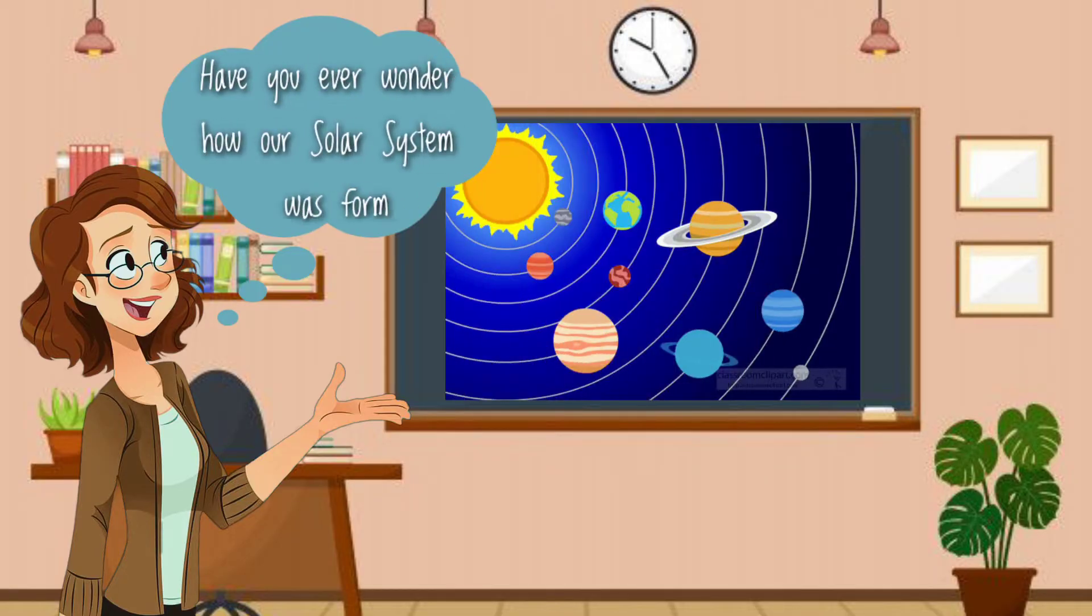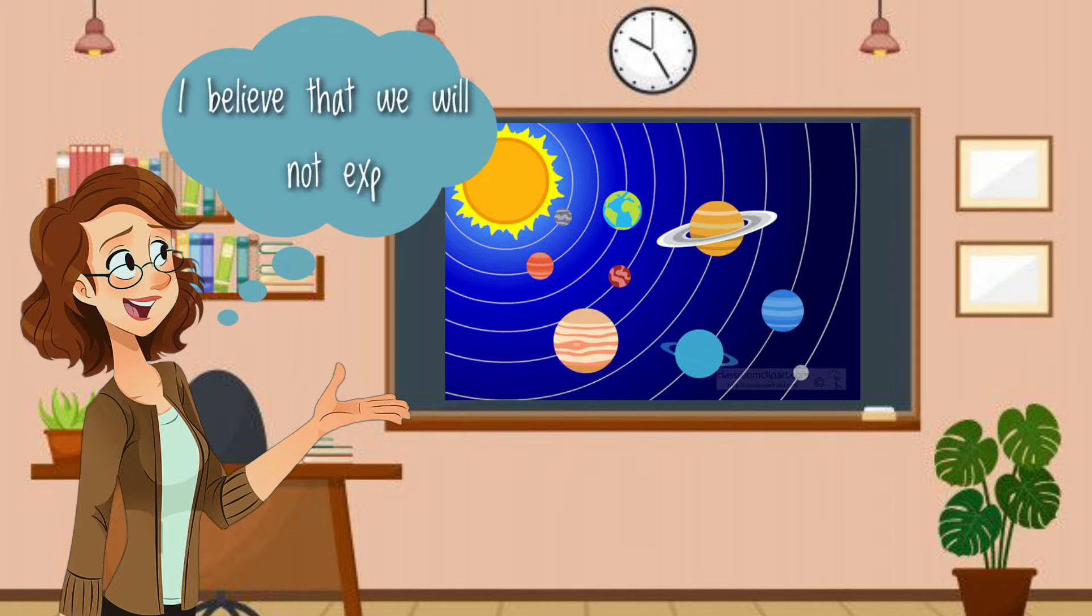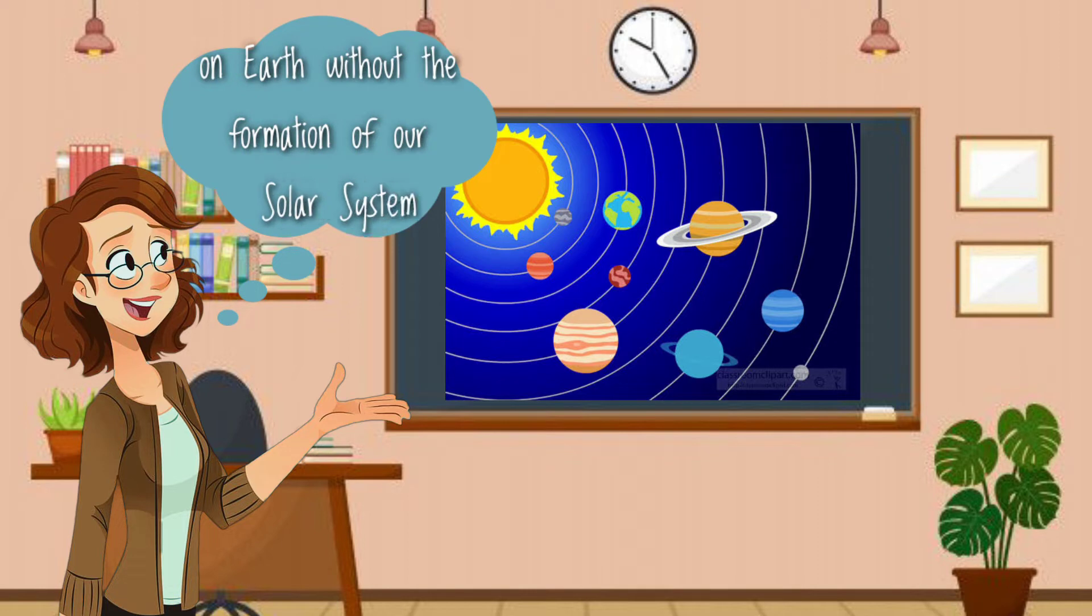Have you ever wondered how our solar system was formed? I believe that we would not experience life on Earth without the formation of our solar system 4.6 billion years ago.